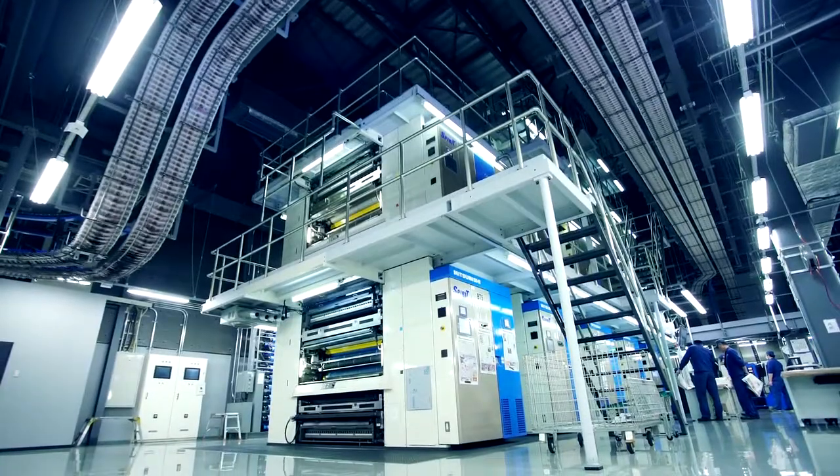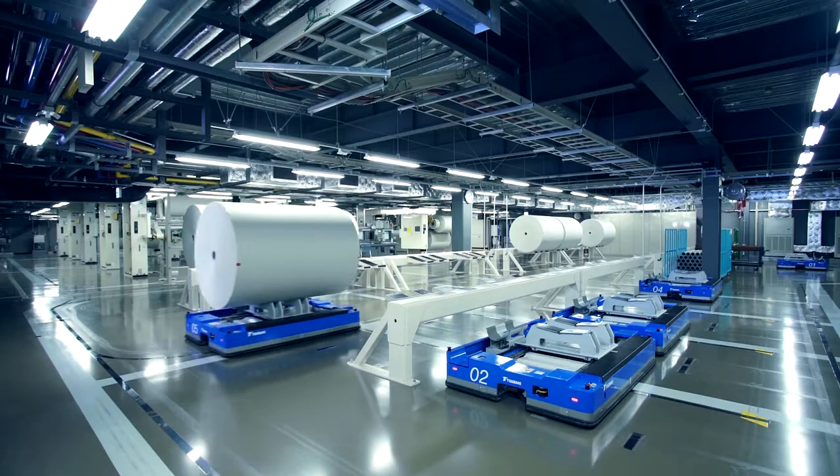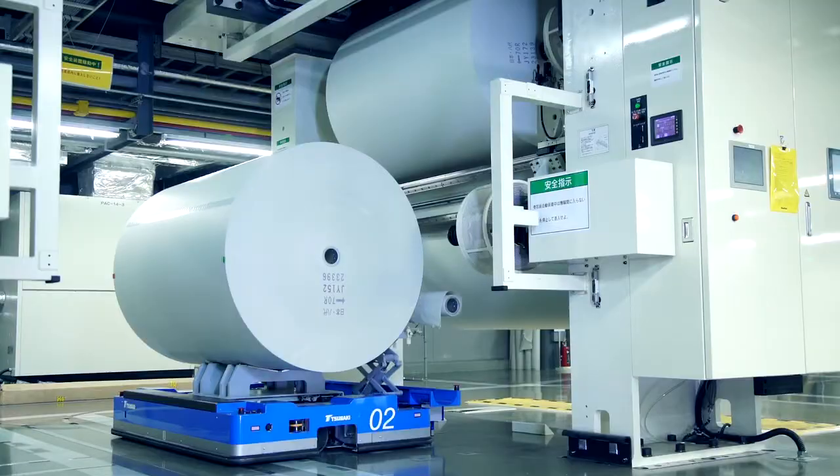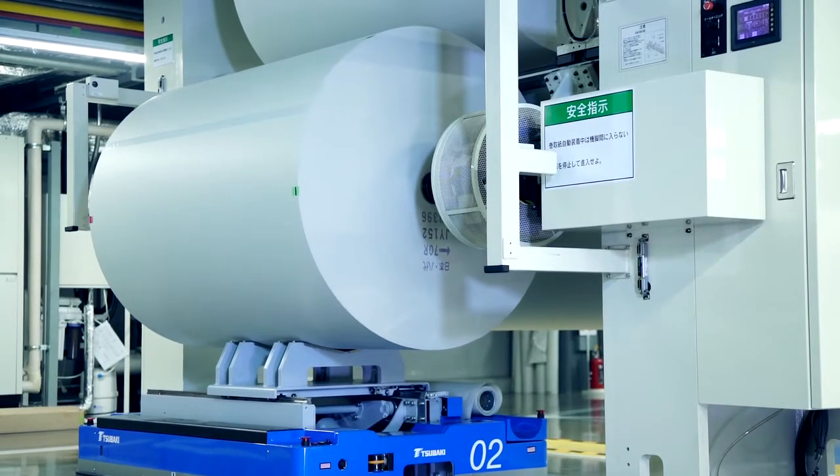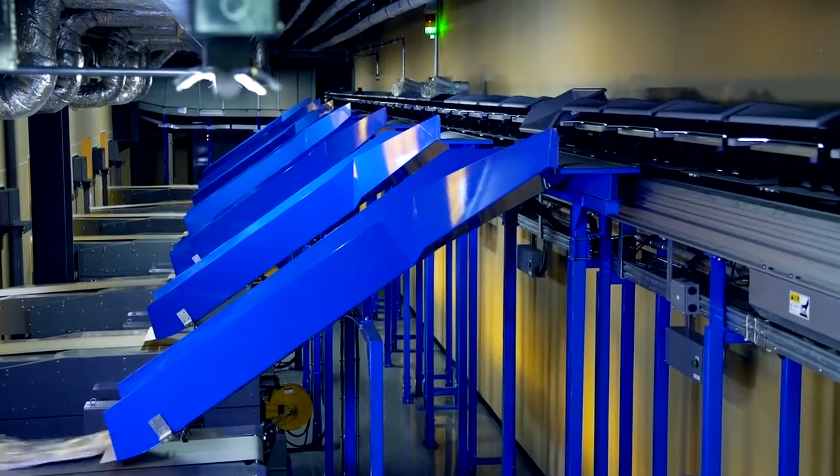You'll find Tsubaki in the newspaper production industry. Unmanned paper roll conveying equipment, automatic unpacking machines and parcel sorting systems. These are just some of the products Tsubaki offers to automate factories and save labor.